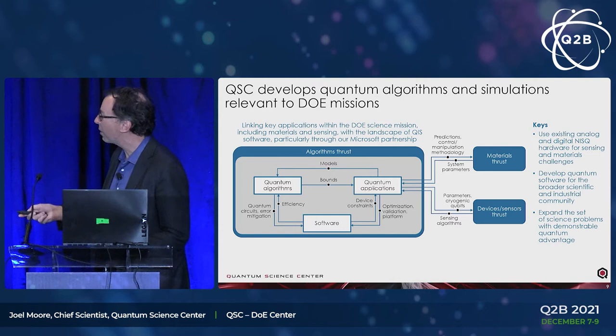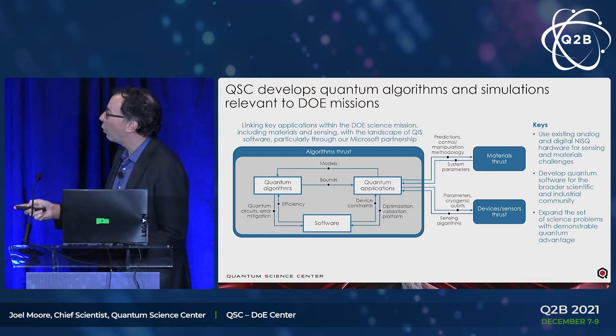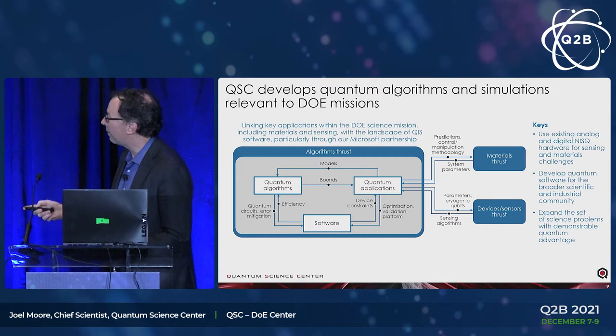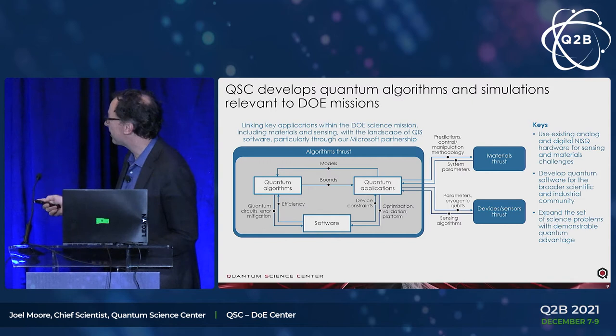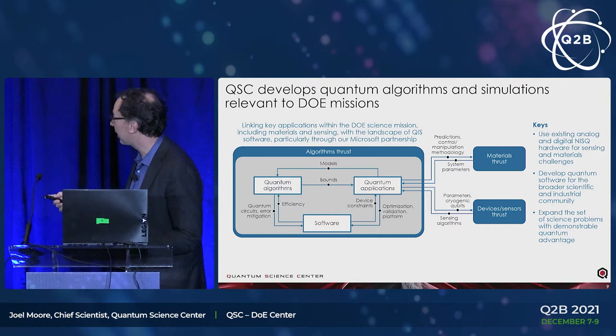We would like our creation of numerical software to be some of the first practical tests of quantum programming languages and quantum algorithms. This thrust is led by Andrew Sornborger out of Los Alamos, who's been working in this area for quite a long time. As we create algorithms and try them out on near-term quantum hardware, we're benchmarking them against studies in our materials thrust. In this thrust, we're not waiting for the magic fault-tolerant quantum computer — we're happy to see what we can do with what we have now.